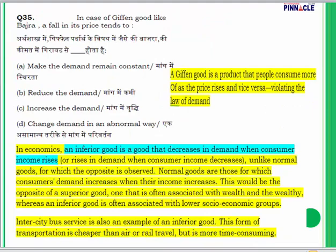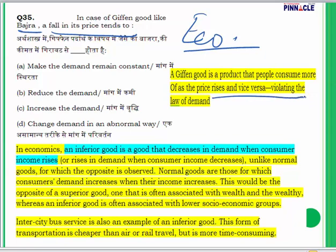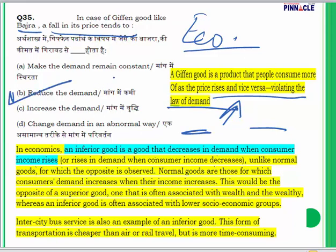Question 35: In the case of Giffen goods like bajra, a fall in its price tends to do what? A Giffen good is a product that people consume more of as the price rises and vice versa, violating the law of demand. An inferior good decreases in demand when consumer income rises, unlike normal goods. In the case of Giffen goods like bajra, a fall in its price tends to reduce the demand. The answer to question 35 is B.